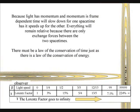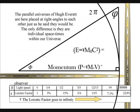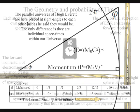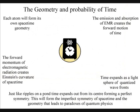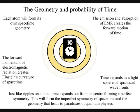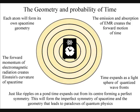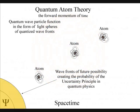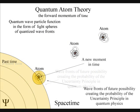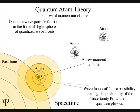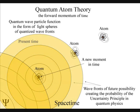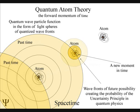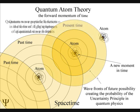The parallel universes of Hugh Everett are here placed at right angles to each other, just as he said they would be. The only difference is they are individual spacetimes within the one universe. To totally understand this, we have to first look at how time is formed and the part we play in its formation. In this theory, the emission and absorption of electromagnetic radiation from one atom to another creates the forward motion of time. Each individual atom of our universe creates its own spacetime geometry relative to its position and momentum.